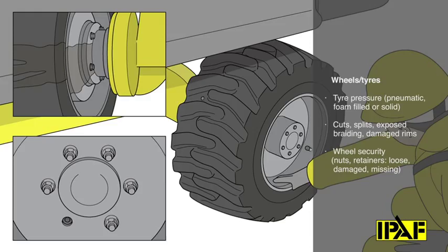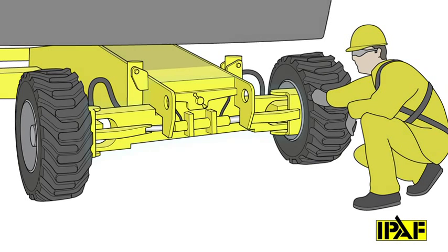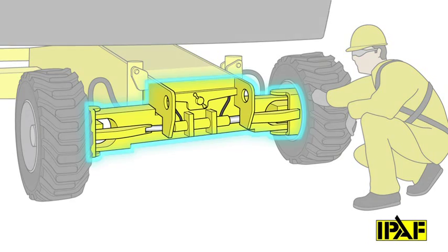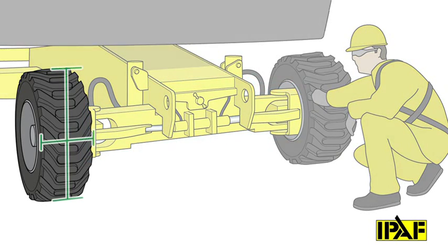Check wheel security by looking for loose, damaged or missing nuts or retainers. There should be no leaking either side of the wheel hub. Check for loose or bent components, pins and fasteners. Check wheel alignment and look for evidence of the wheels having been left in crab, four wheel steer or two wheel steer mode.